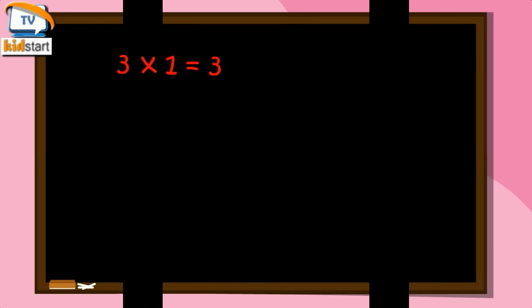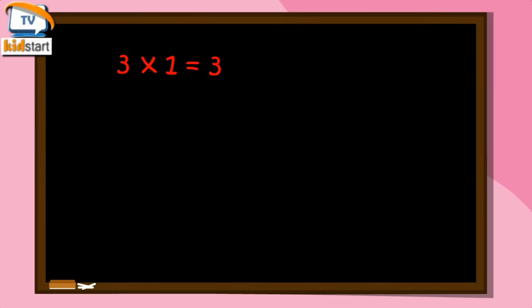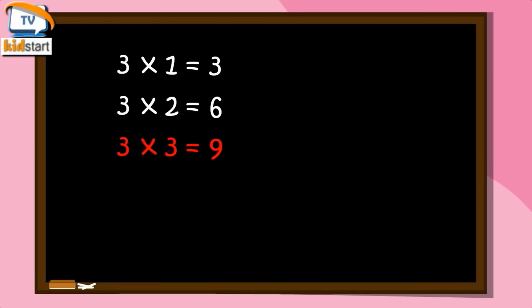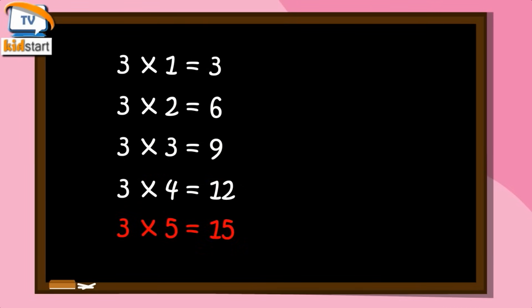Three Ones are Three. Three Twos are Six. Three Threes are Nine. Three Fours are Twelve. Three Fives are Fifteen.